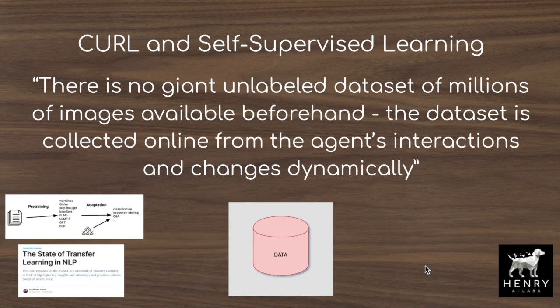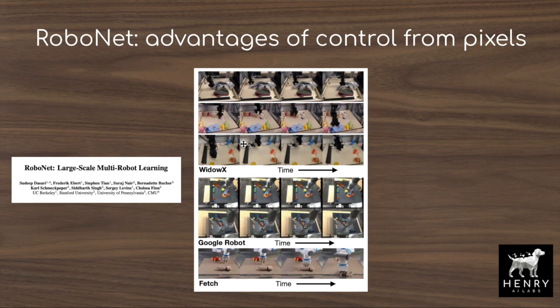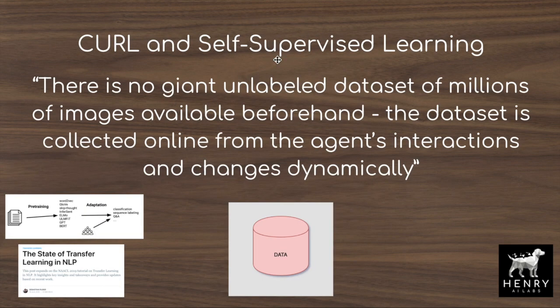Self-supervised learning is most commonly thought of as playing on massive unlabeled data — like scraping text from the internet in NLP. But here there's no giant pre-existing unlabeled dataset; the dataset is collected online from the agent's interactions and changes dynamically. This shows the contrastive self-supervised learning objective as a better way of learning representations than supervised objectives or auto-encoders, demonstrating the power of contrastive learning as a way of structuring loss functions rather than just leveraging massive datasets.